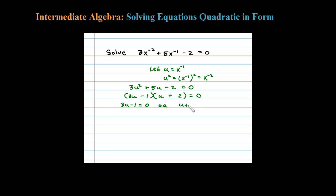So u plus 2 could equal 0, or 3u minus 1 could equal 0. Solve each one individually. 3u equals 1, u then could be 1/3, or u could be negative 2. Once you solve for u,